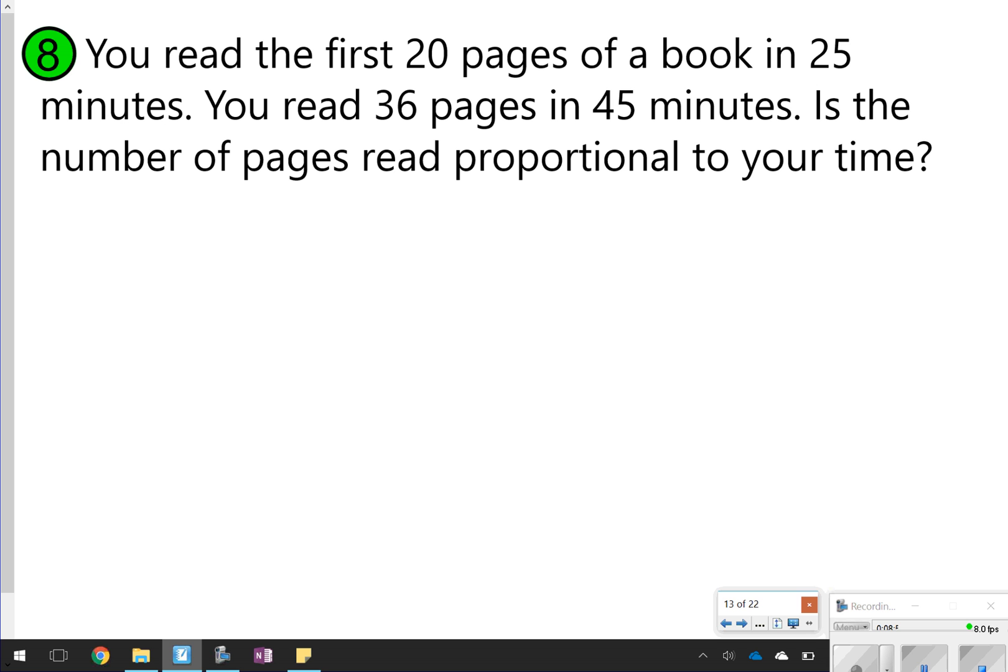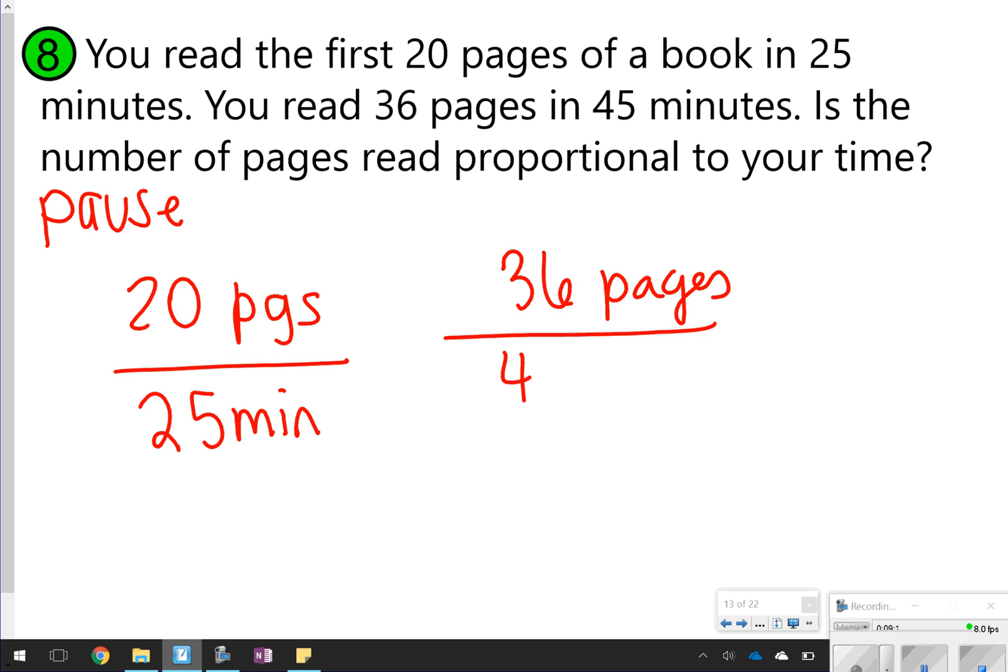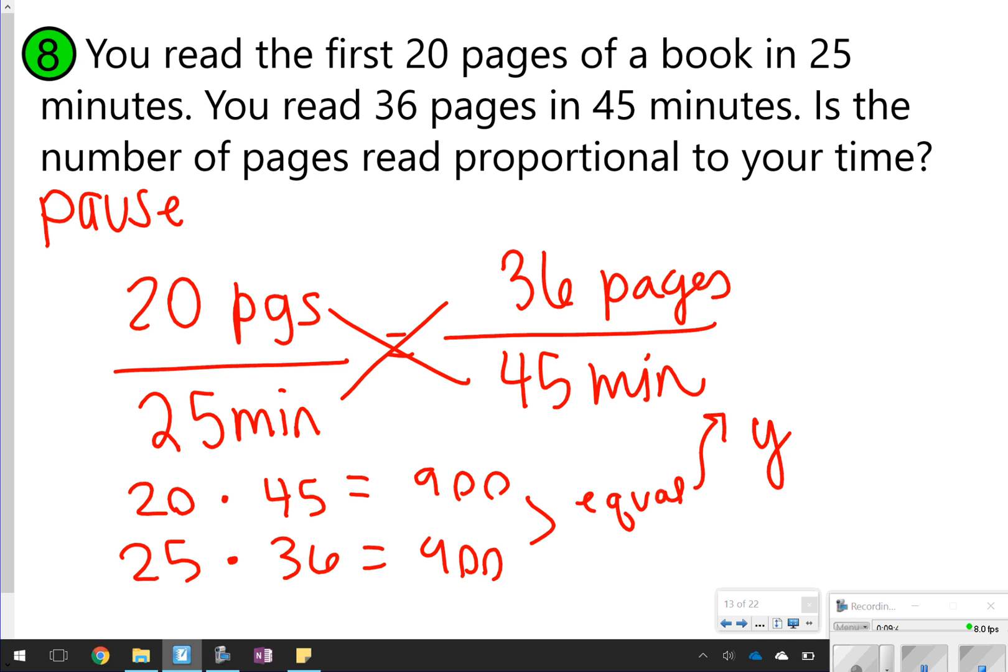So here's your chance to try it. You're going to go ahead and pause the video now, read it, set up your two rates, and cross multiply to see if it's proportional. All right, here we go. So I read the first 20 pages of a book in 25 minutes, and then I read 36 pages in 45 minutes. Again, notice how I set up the rates the same. 20 pages, 25 minutes. 36 pages, 45 minutes. Pages over minutes. I'm going to see if it's proportional by cross multiplying. So I'm going to do 20 times 45, and 25 times 36. I know 20 times 45 is 900, and then 25 times 36 is also 900. These are equal. So because they're equal, yes, this is a proportional amount of time. How did you do?